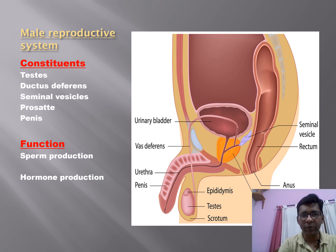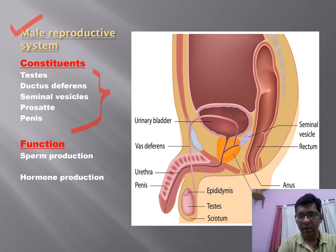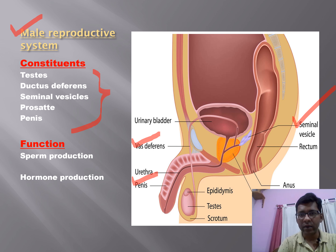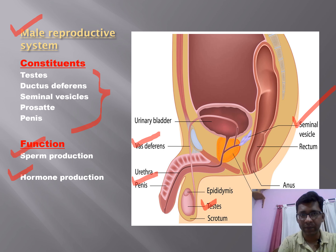The male reproductive system constituents are the testis, vas deferens, seminal vesicles, prostate, and penis. Their function is sperm production and hormone production, similar to the female reproductive system.